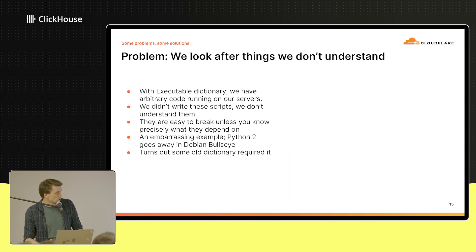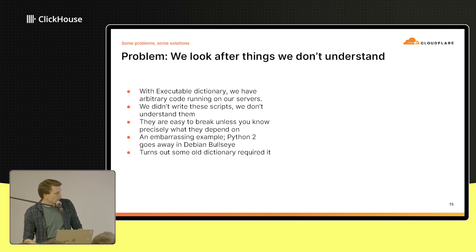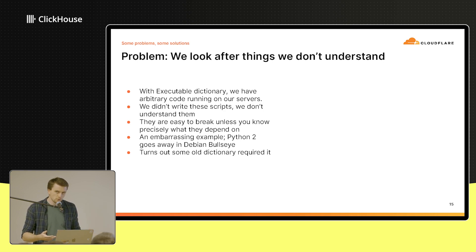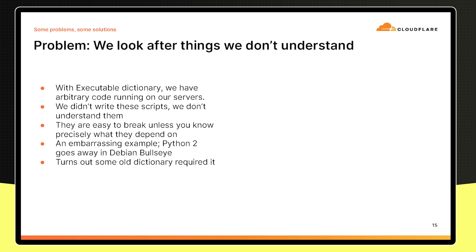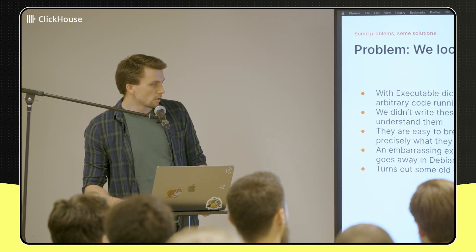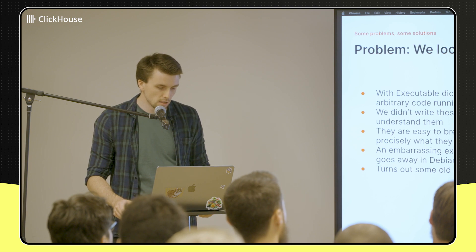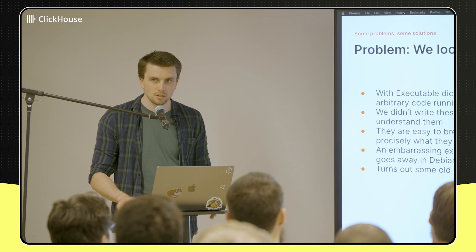Another problem is that with dictionaries, other teams are making them and kind of just drop-kicking them onto our machines. Executable dictionaries will just run a script — it could be written in Python or Bash or whatever. If that script is written by another team, we don't really have deep knowledge of how it works or what its dependencies are, so every change to our environment can potentially break the script. An embarrassing example: we were upgrading to Debian Bullseye, which removes Python 2. Python 2 was end-of-life three years ago — but it was a big deal. We had dictionaries that broke, and those dictionaries were used by some of Cloudflare's products, which caused some consternation.